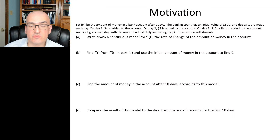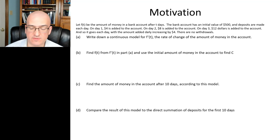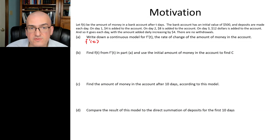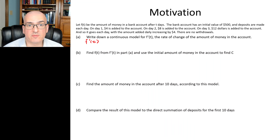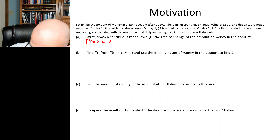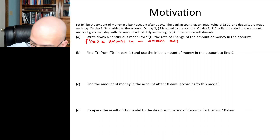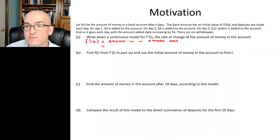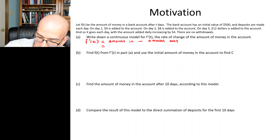Part A asks us to write a continuous model for the derivative of f of t — for the rate of change of the amount of money put into the account. F prime of t is the rate of change of how much money is inside a bank account. The rate of change of the money is amount in minus amount out. On day one $4 is added, on day two $8 is added, on day three $12 is added. So I can't say f prime of t is equal to 4 — that's wrong.